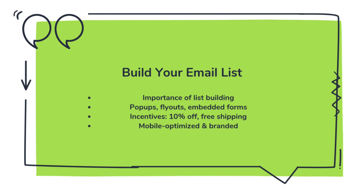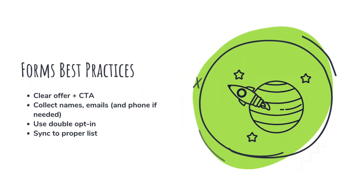Now that Klaviyo is connected, let's talk about building your email and SMS list — the backbone of your marketing. Inside Klaviyo, go to Sign Up Forms and choose between pop-ups, fly-outs, or embedded forms. These forms appear on your Shopify site and encourage visitors to join your list, often in exchange for a discount or offer. You can fully customize the design and messaging to match your brand — add a headline, offer, and call to action.